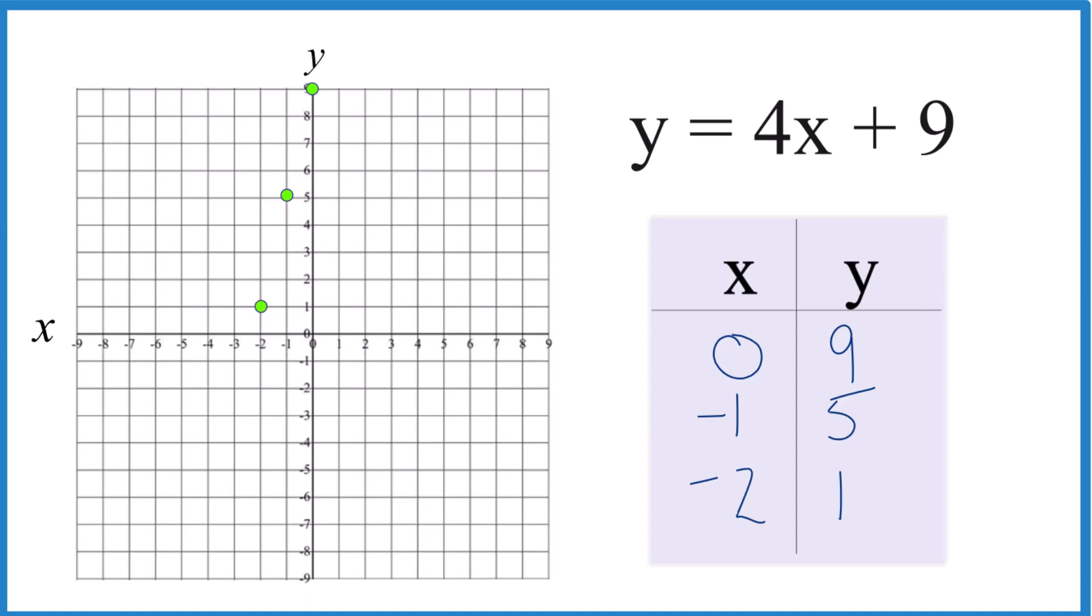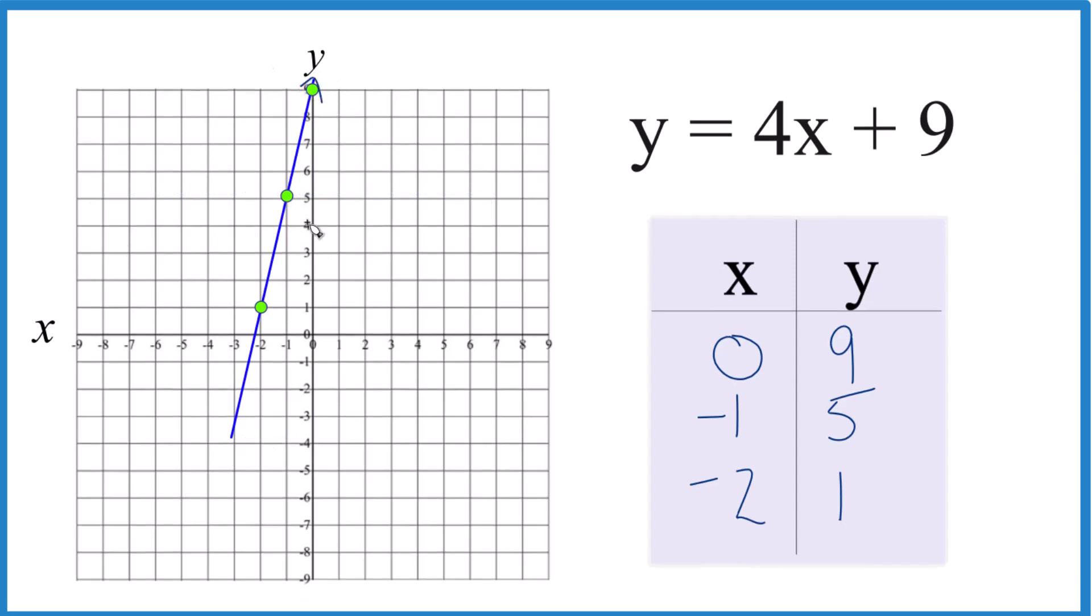Let's put a line through that. We'll put arrows here to show this goes to infinity. That's the graph for y equals 4x plus 9. And again, you could put any value in for x. You would end up with a value for y that would be somewhere here on our line. This is Dr. B, graphing y equals 4x plus 9. Thanks for watching.